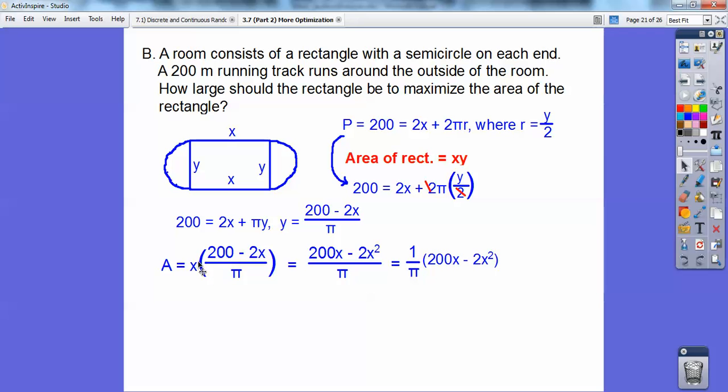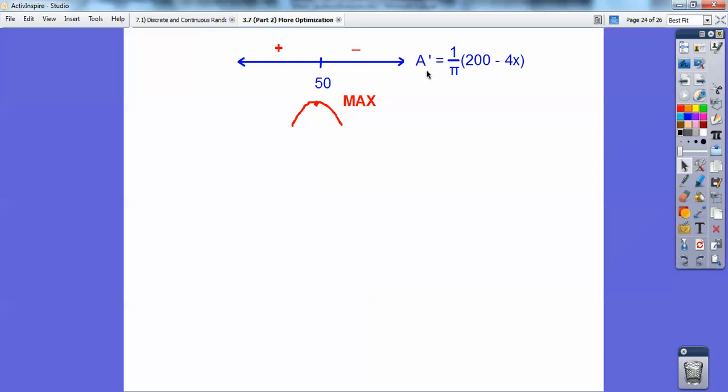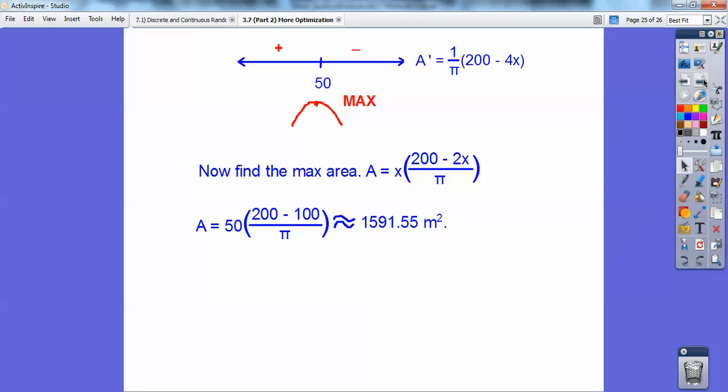Now I can take the derivative. This is 200 minus 4x times 1 over π. I set that equal to 0 and get x equals 50. I want to test to make sure it's a maximum critical point, so I test x equals 50 and got it to be positive then negative, meaning it's going up and down, showing a maximum. So I plug in 50 and get about 1591.55 meters squared.